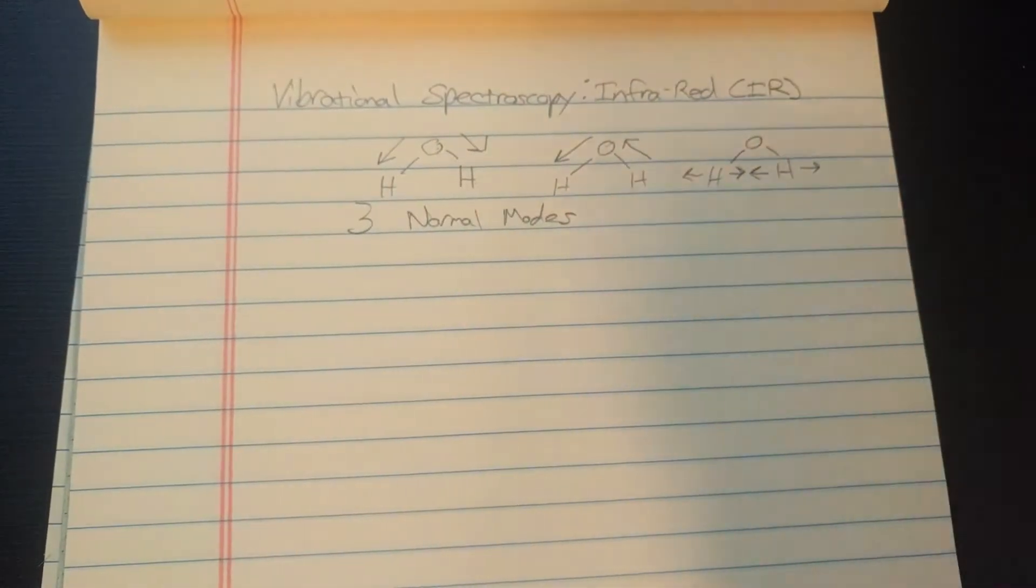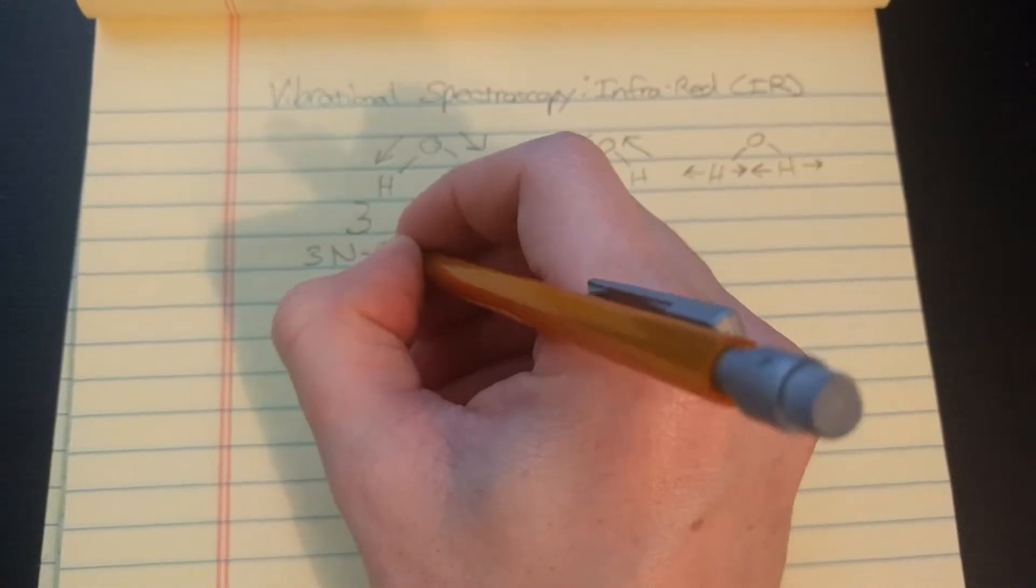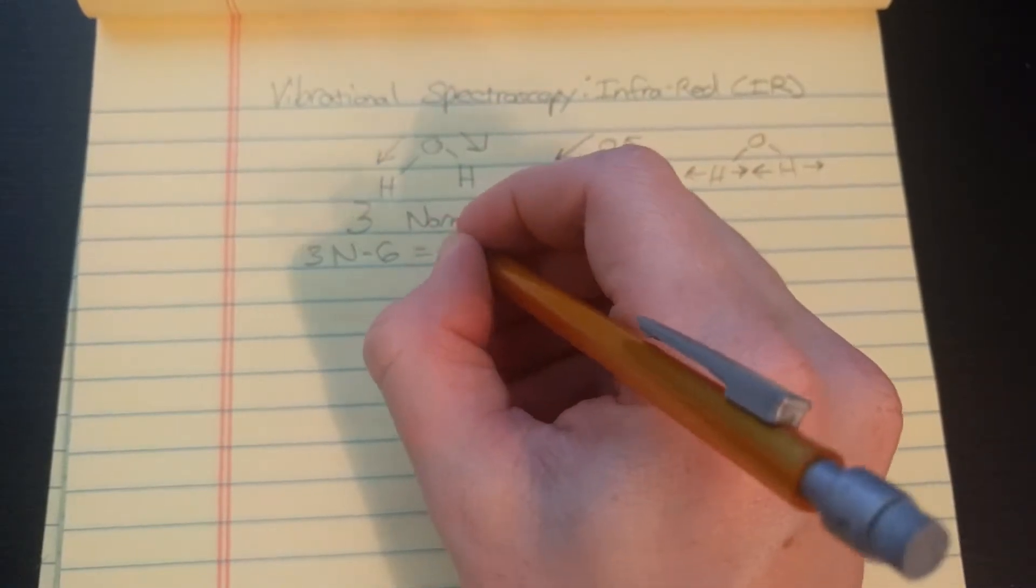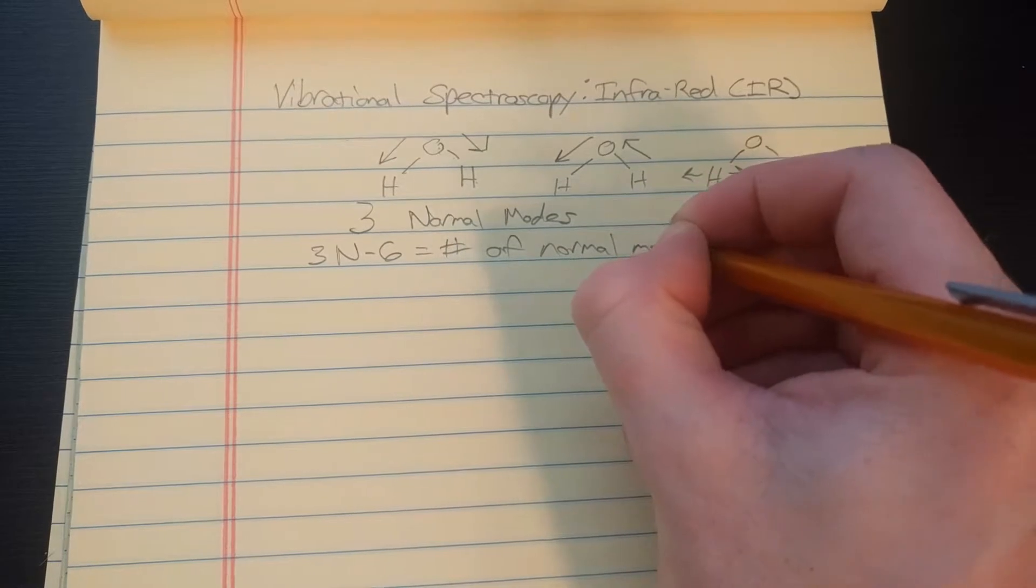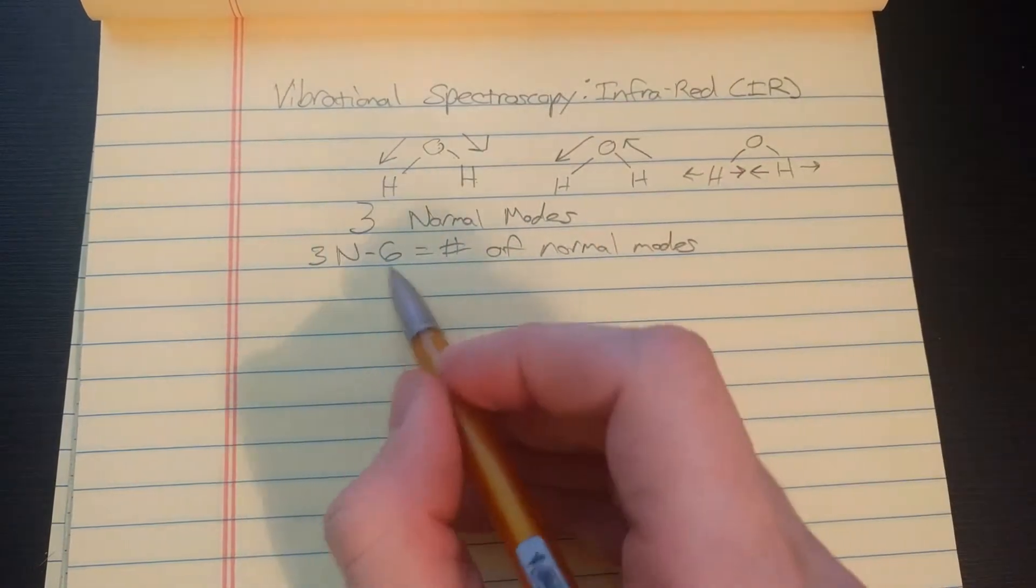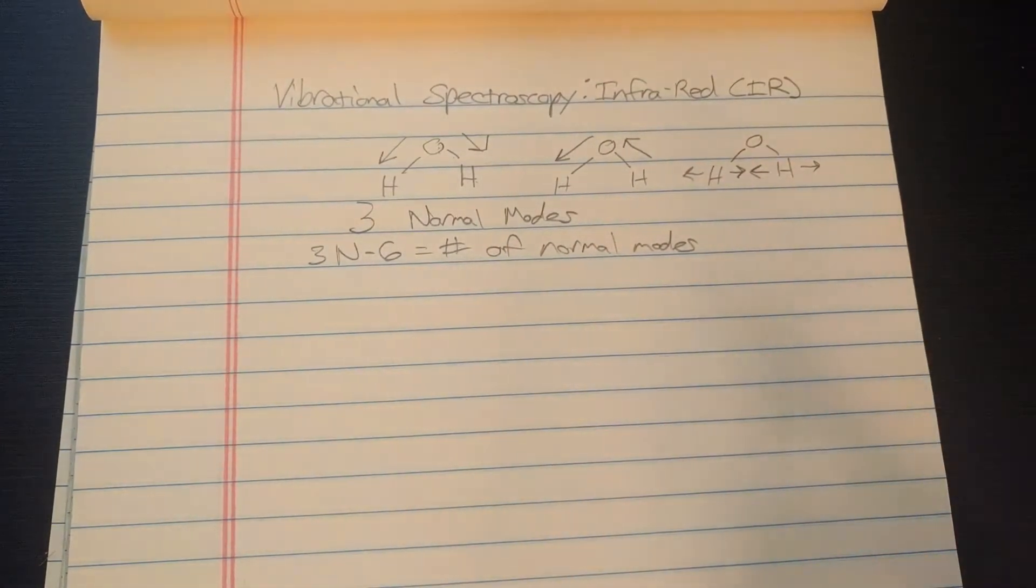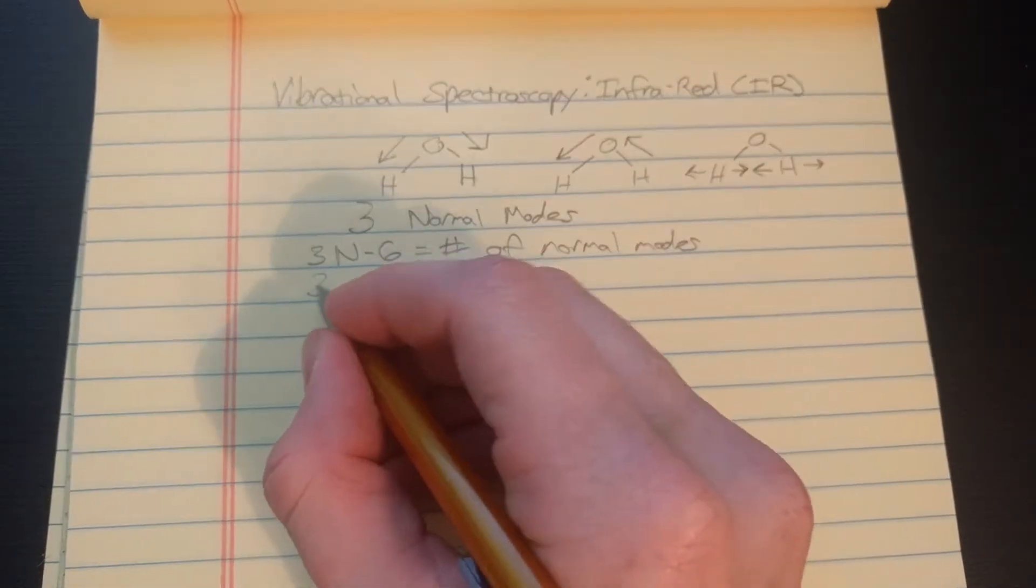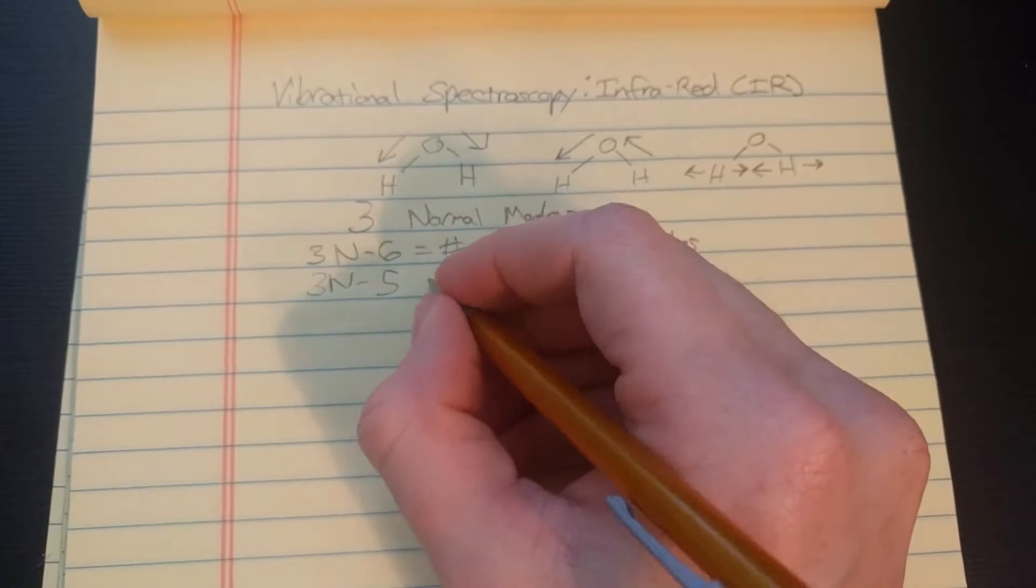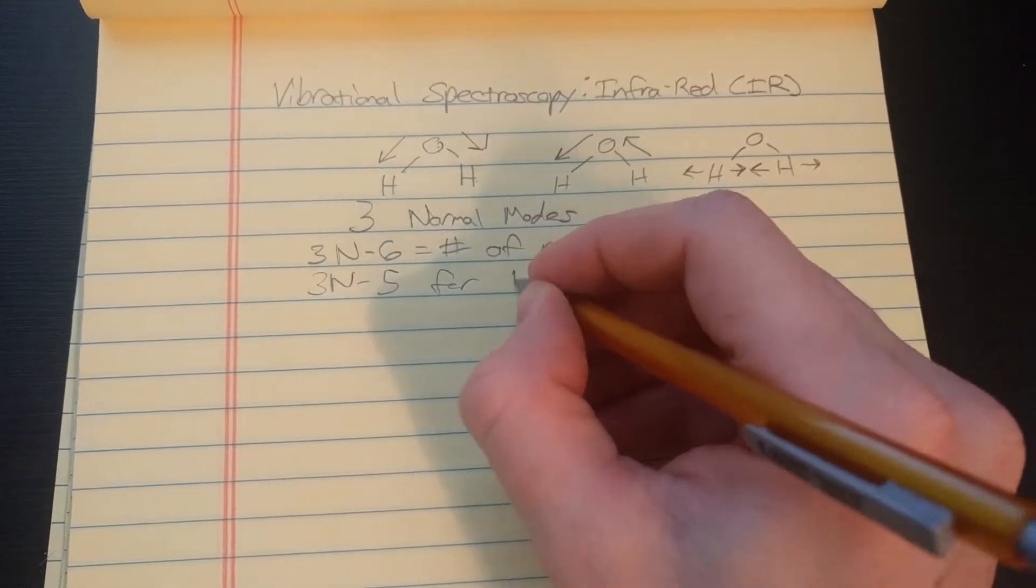And in general, if you have n atoms, then the number of normal modes are 3n minus 6. So there's 3n minus 6 number of ways a molecule can vibrate. Unless it's linear, then this is 5. So the rule is 3n minus 5 for linear molecules.